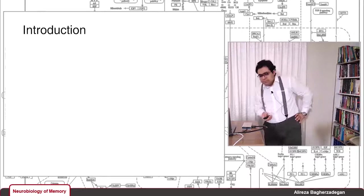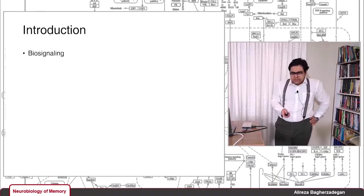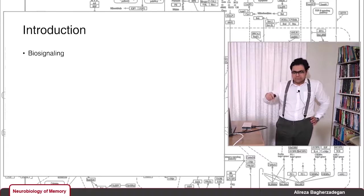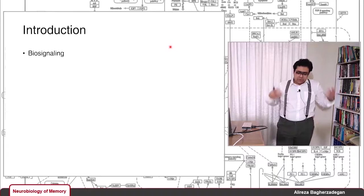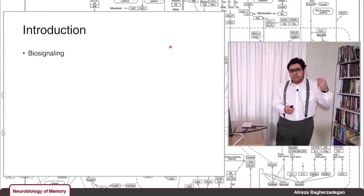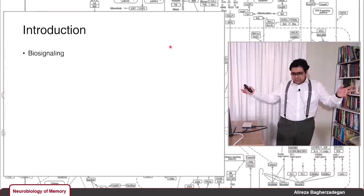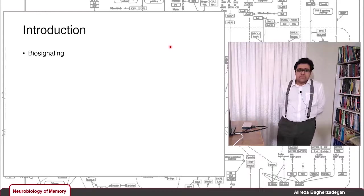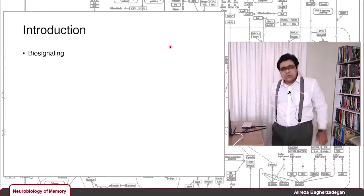Now I'm going to introduce some basic concepts in cell signaling. What is biosignaling? Biosignaling is all about the communication between cells and other cells, and between a cell and its environment. Sometimes you can see biosignaling as the communication between the whole organism and its environment. For example, the information we get through our sensory organs is a sort of communication between different stimuli in our environment and us as organisms.